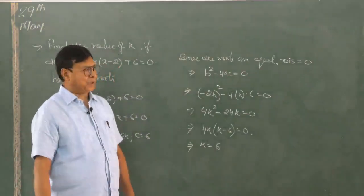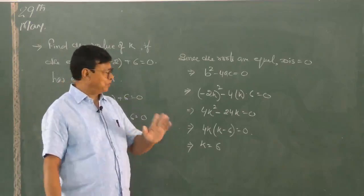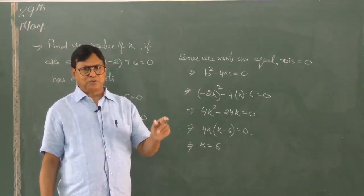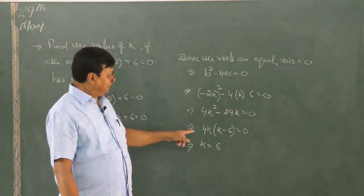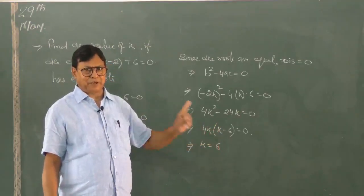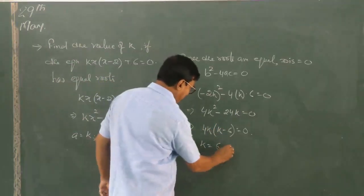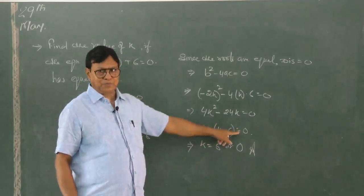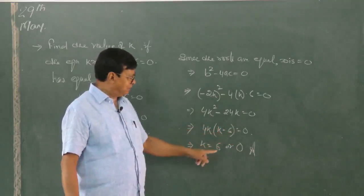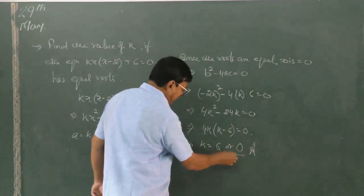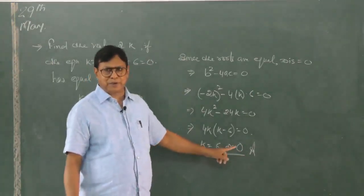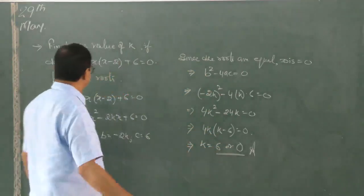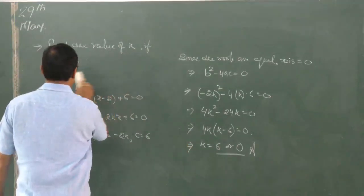We get a quadratic equation in k. Whenever you get a quadratic equation, you will have two solutions — you must account for both. So either 4k equals 0, giving k equals 0, or k minus 6 equals 0, giving k equals 6. Be very careful: wherever you get a quadratic equation the answer will be two values, and you have to write both, otherwise you will lose marks.